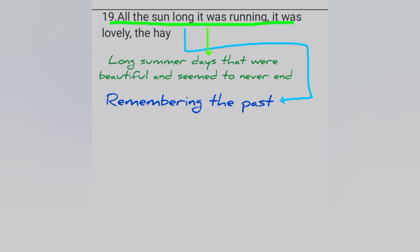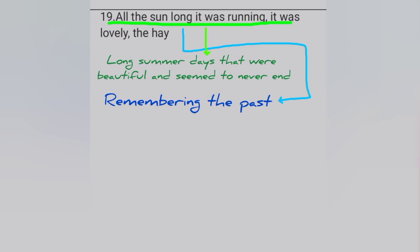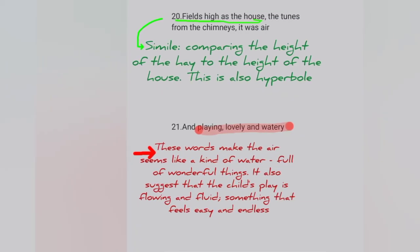Line 19: 'All the sun long it was running, it was lovely, the hay.' The interpretation of 'all the sun long it was running' is long summer days that were beautiful and seemed to never end. 'Long' — he is remembering the past.